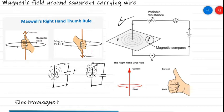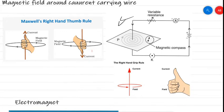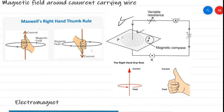Around the bar magnet the shape of lines of forces was semicircular from north to south. But around a current-carrying conductor, we observe they are in a complete circular form. So the direction here cannot be described as north to south — we need another rule to understand the direction. For that purpose we use the right-hand rule.